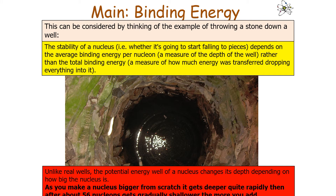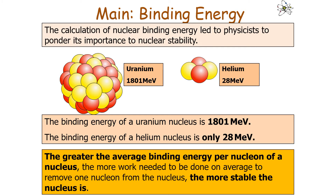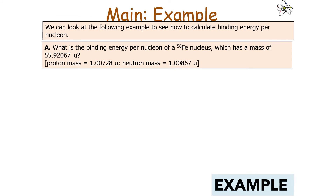Unlike real wells, the potential energy well of a nucleus changes its depth depending on the size of the nucleus. As you build a nucleus up from scratch, it gets deeper quite rapidly, then after about 56 nucleons it gets gradually shallower as more are added. The binding energy per nucleon is the average work done required to move one nucleon from the nucleus — the energy on average needed as potential energy to overcome the strong force attraction. The greater the average binding energy per nucleon, the more work needed to remove just one nucleon, and therefore the more stable the nucleus. In a nuclear process, it is the change in binding energy per nucleon which determines whether a process happens.